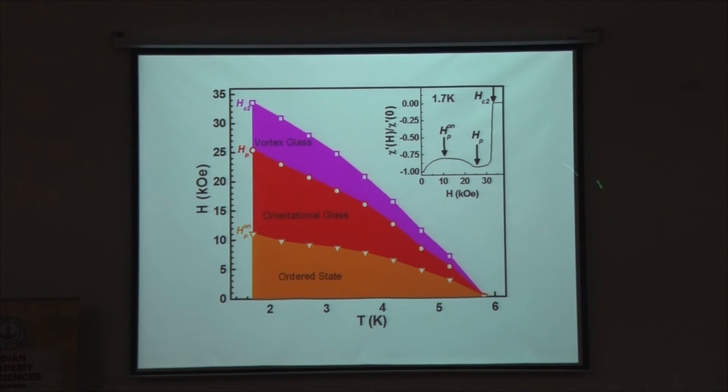So now the phase diagram becomes like this. What I have shown you before had just this one line. Now I get these two lines in the phase diagram. I have an ordered state here, I have an orientational glass here, and then I have a vortex glass, which is equivalent to an amorphous solid, which has no positional or orientational order. The question that I can ask is, are these really phase transitions?